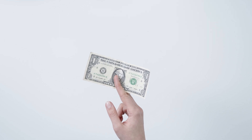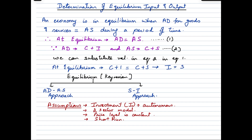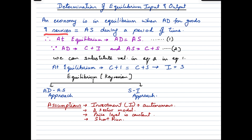Let's quickly take a look at what equilibrium means. For any economy to be in equilibrium, this equality must hold — it is called AD equal to AS, where aggregate demand for goods and services is equal to aggregate supply during a given period of time. At equilibrium, AD always equals AS.